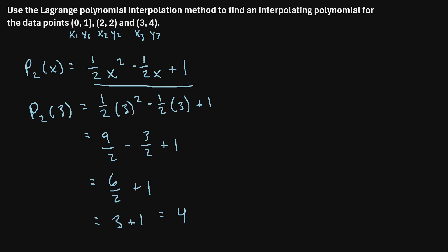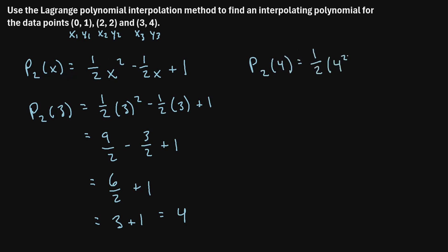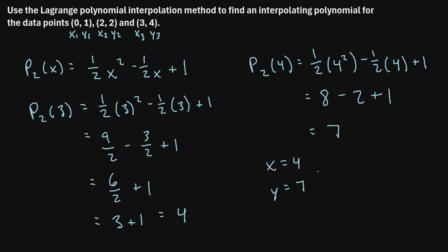Another way to use this polynomial is by plugging in a new x value to estimate the corresponding y value. For example, plugging in x = 4: P₂(4) = (1/2)(16) − (1/2)(4) + 1 = 8 − 2 + 1 = 7. So our polynomial estimates that when x = 4, the y value would be 7. That is the general idea of how to use the Lagrange polynomial interpolation method.